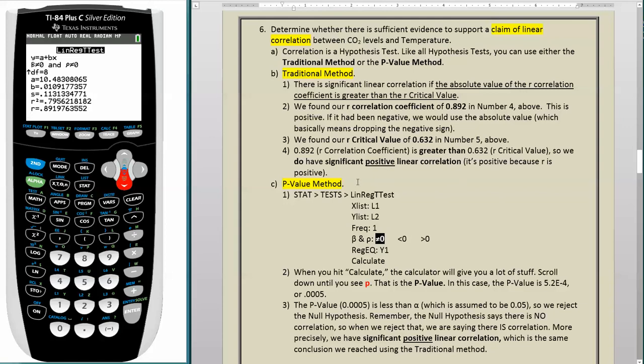Well, what about the p-value method? If we go back and look, and I've repeated the process here of going to linreg t-test, when we hit calculate, the calculator gives us all this stuff, and then we look for p, and there is p. 5.219 e to the negative 4, and there you see it. Well, this e to the negative 4, if we write it in standard decimal notation, it's .0005.